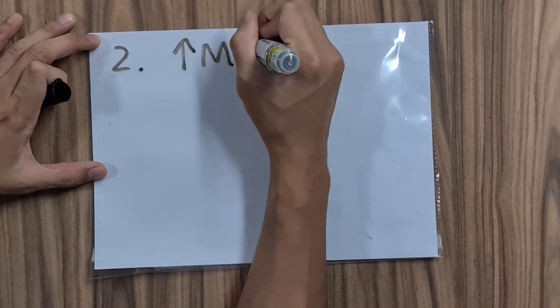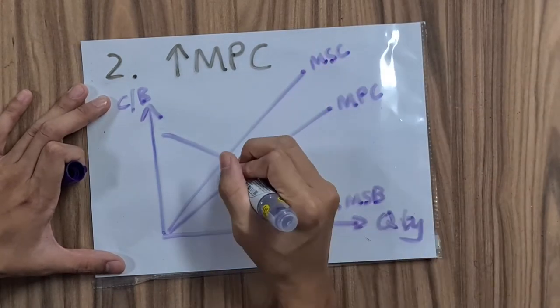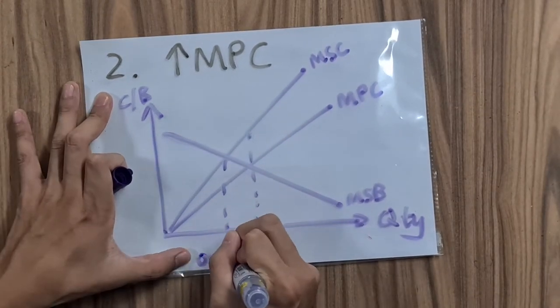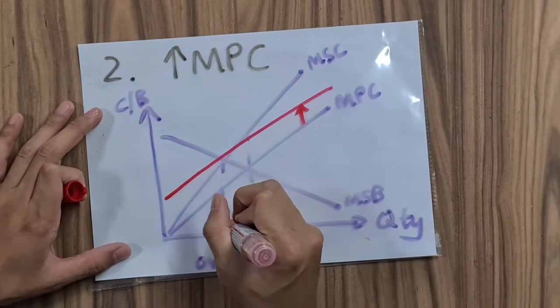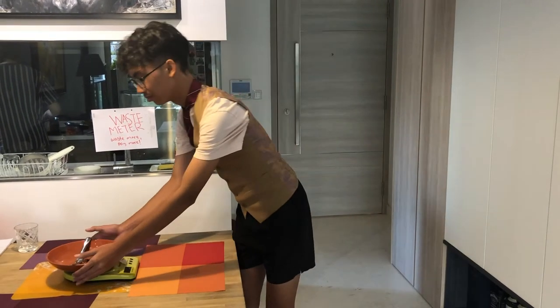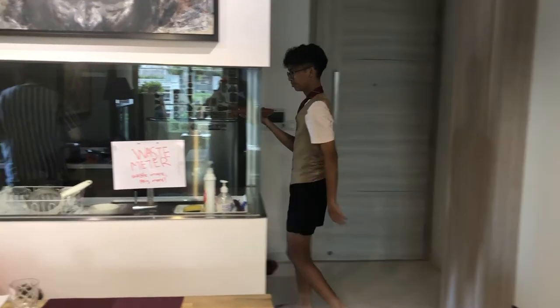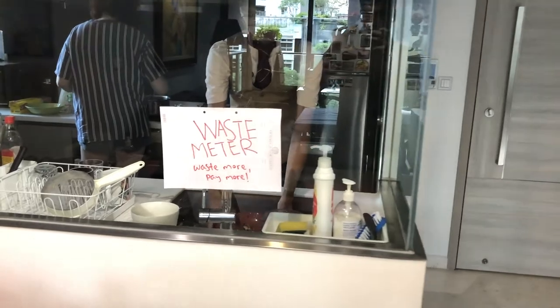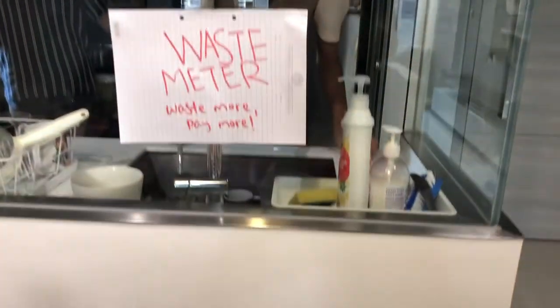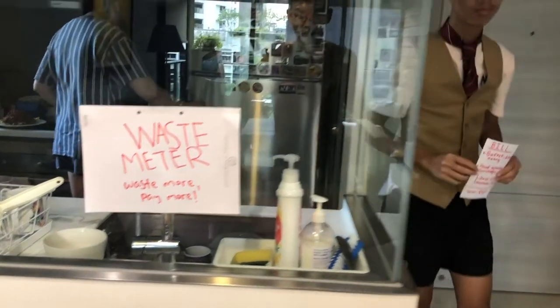On to our second solution: penalize. This method increases the marginal private cost of consuming food to match the marginal external cost produced. As seen on this diagram, it thus allows us to reduce the overconsumption problem. A waiter will collect the leftovers and dump them into the waste meter — a machine used to accurately measure the amount of food wasted. A receipt reflecting the customer's bill is then dispensed, and assuming the customer wasted food, he will pay a surcharge proportional to the amount of food left over.